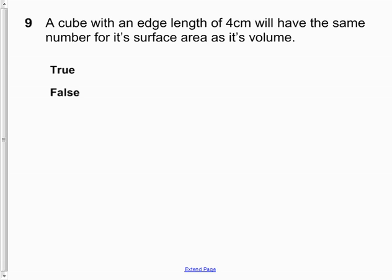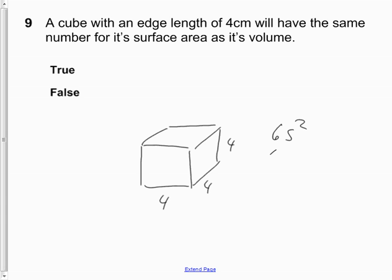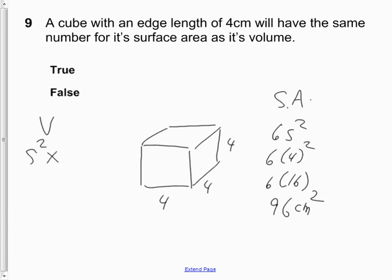Question 9: a cube with an edge length of 4 centimeters will have the same number for its surface area as its volume. For surface area: 6 times 4 squared, or 6 times 16, equals 96 square centimeters. For volume: side squared times height, or 4 squared times 4, is 16 times 4, which equals 64 cubic centimeters. So are they the same? No, they are not — the answer is false.